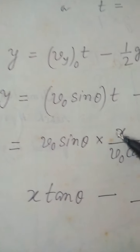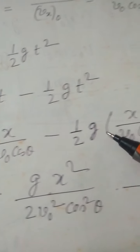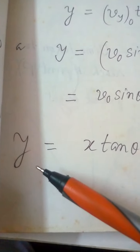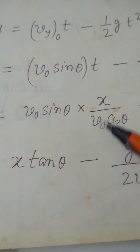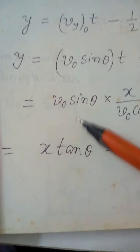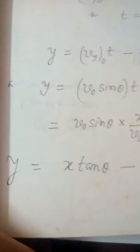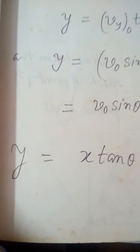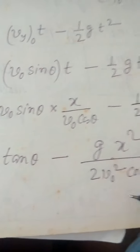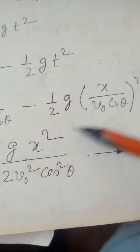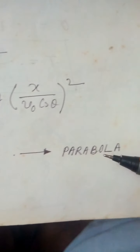Now substituting t = x / (v0 cos theta) into the vertical equation: sin theta / cos theta gives tan theta, and v0 cancels. So y = x tan theta − g x² / (2 v0² cos² theta). This is the equation of the path, and it is a parabolic equation.